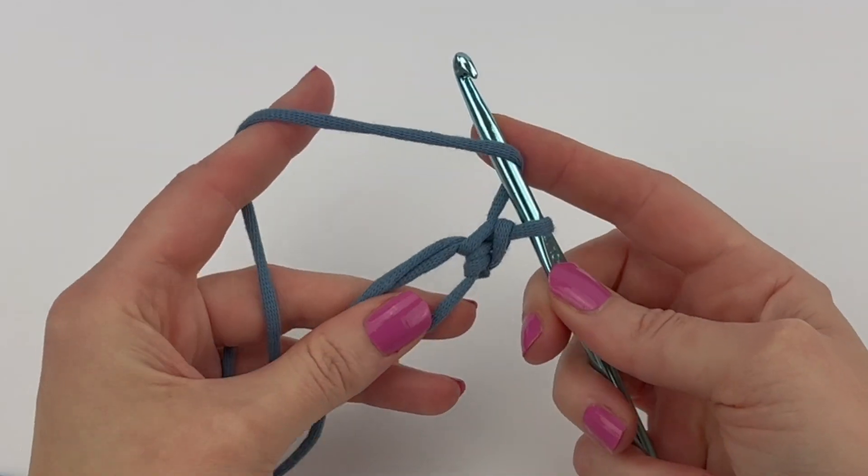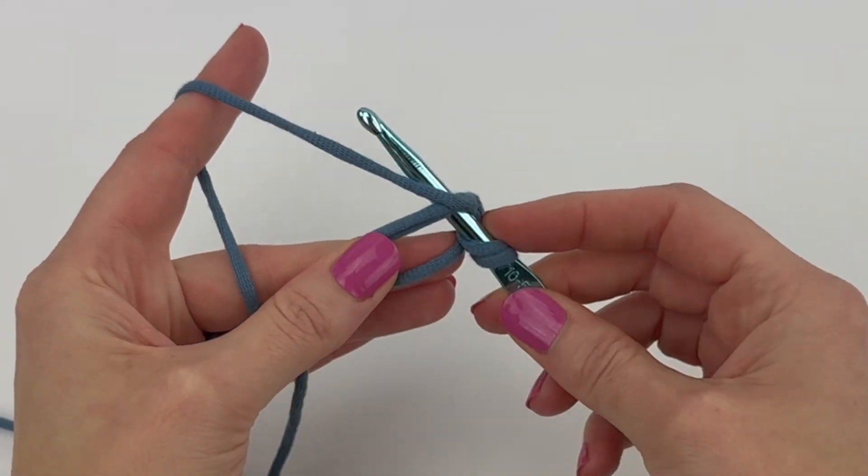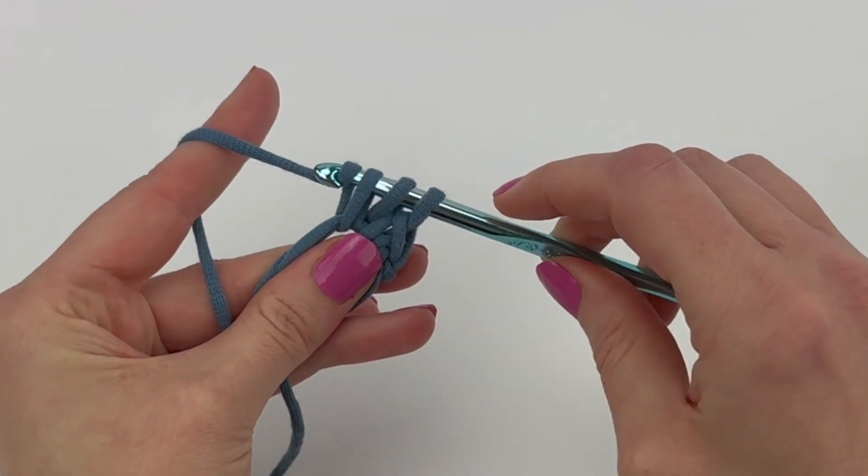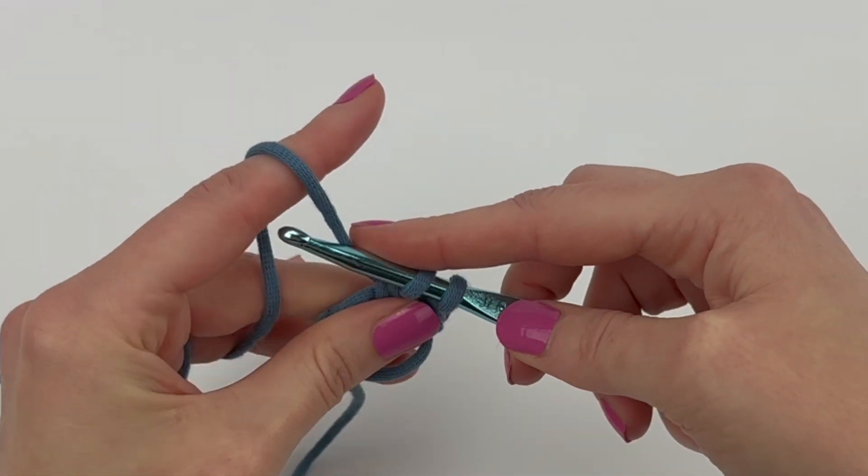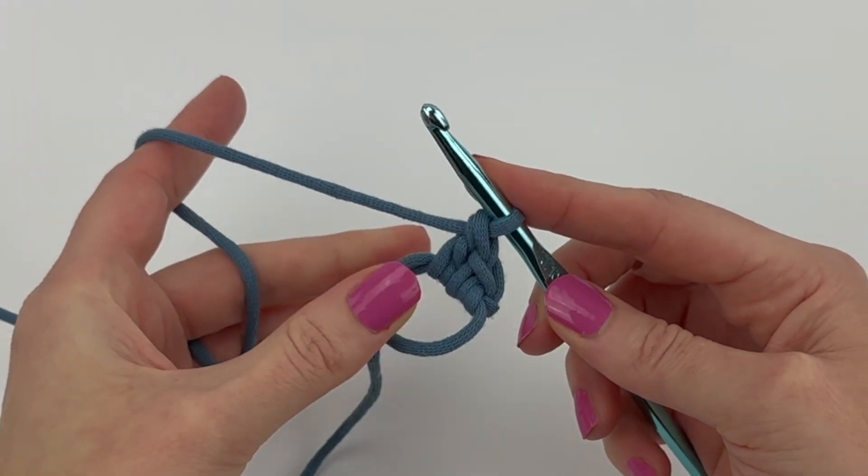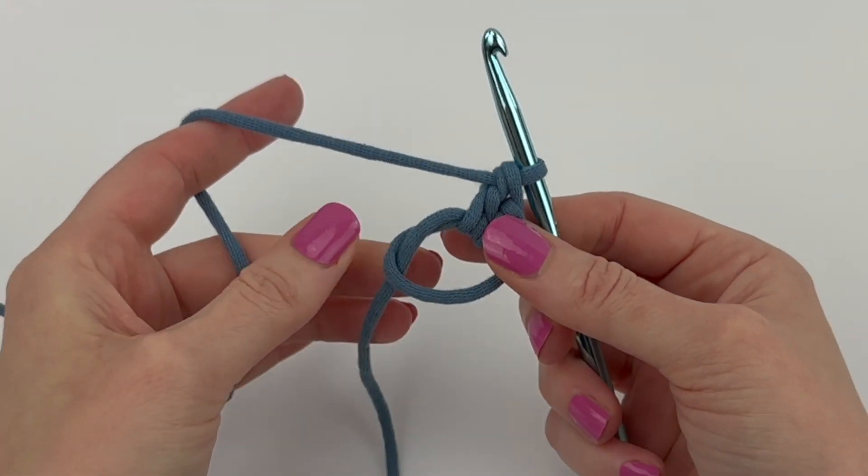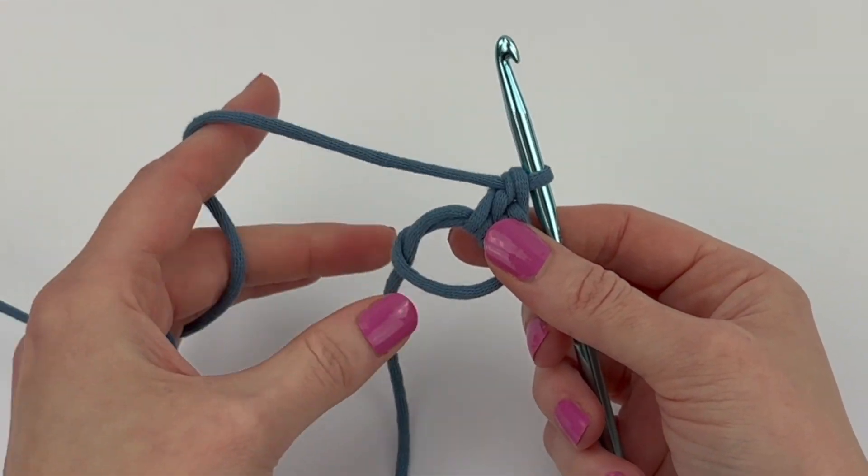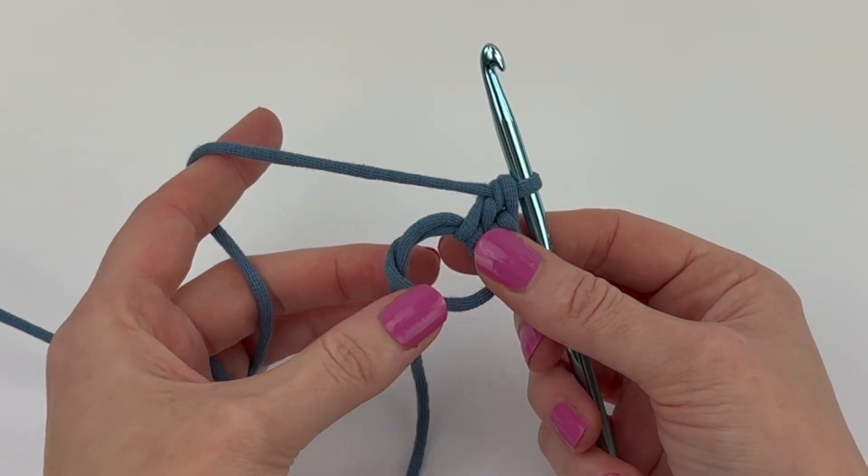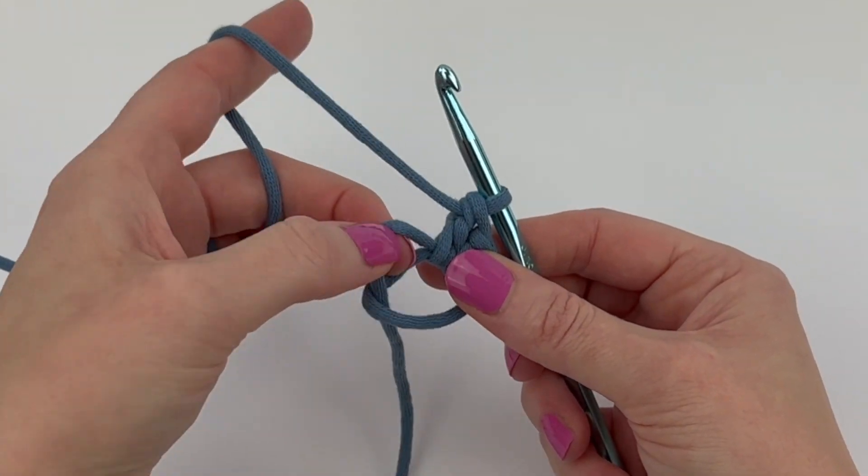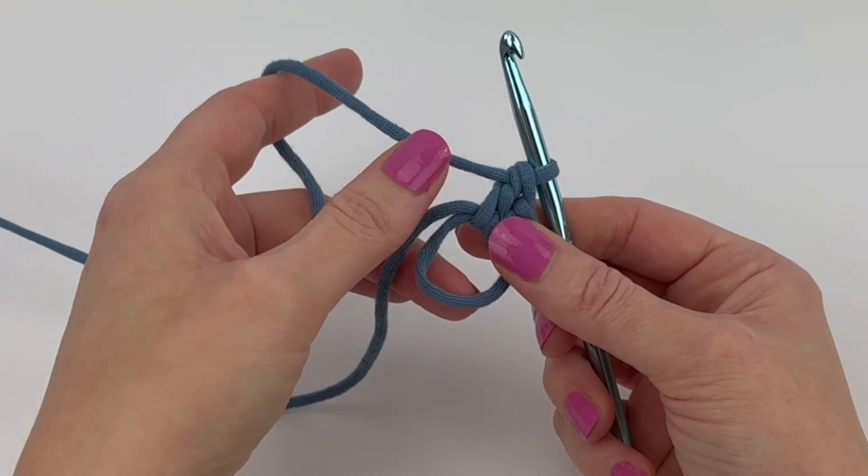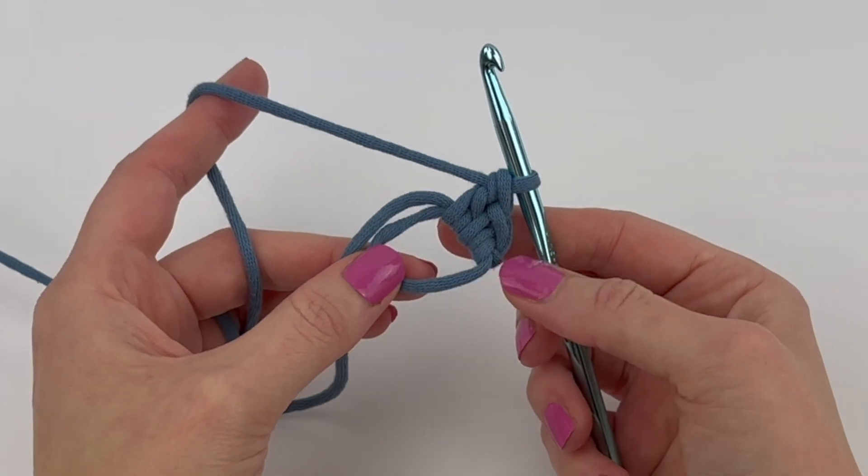You can also make double crochet stitches into the magic circle. You can make any type of stitch into the magic circle and it's okay if the tail gets twisted inside of it. I just like to pull it out to keep it on the outside and parallel to the circle.